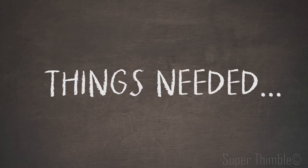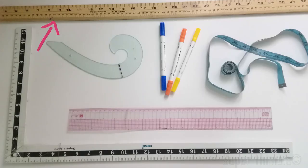The things needed are a long ruler, L scale also known as Taylor scale, French curve, markers, measuring tape and a chart paper.